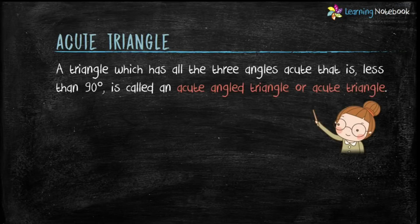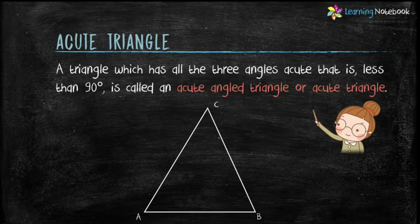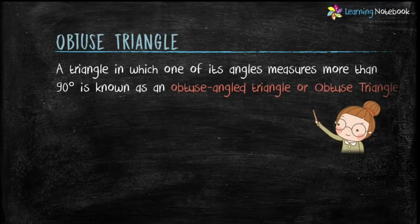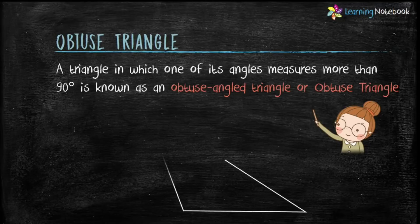First type is acute triangle — a triangle which has all the three angles acute, that is less than 90 degrees. Next type is obtuse triangle — a triangle in which one of its angles measures more than 90 degrees is known as an obtuse angled triangle or obtuse triangle.